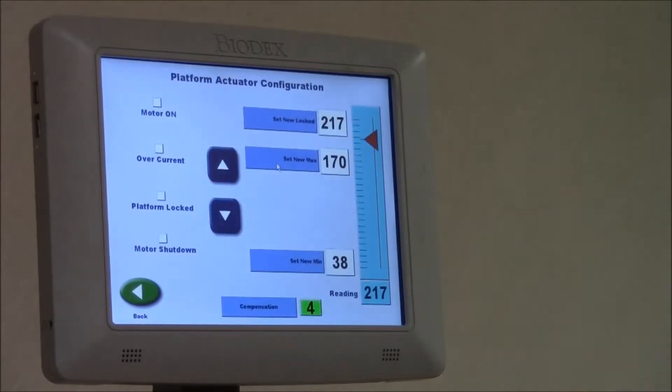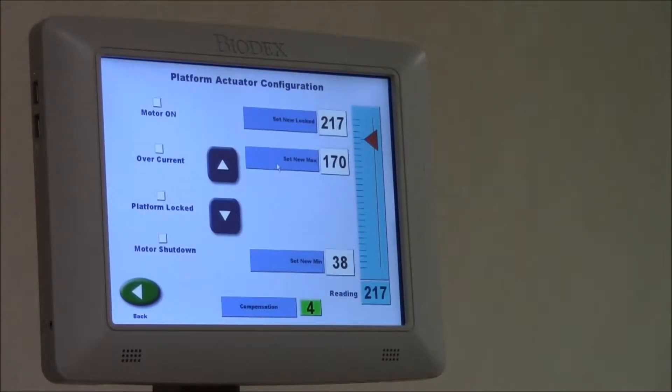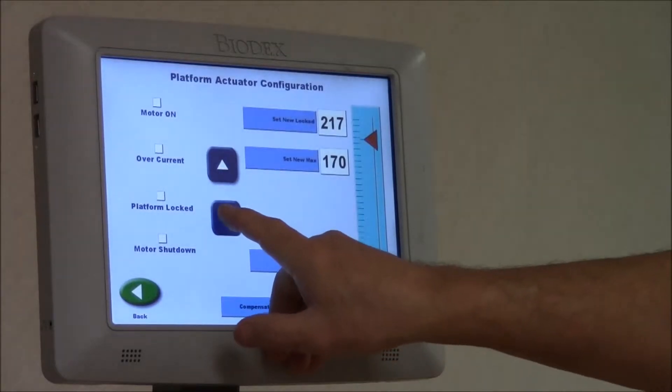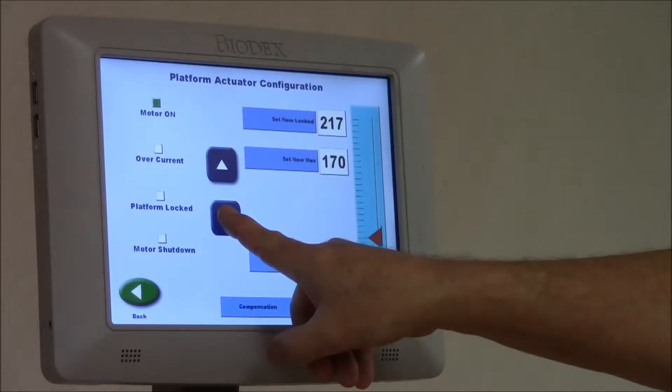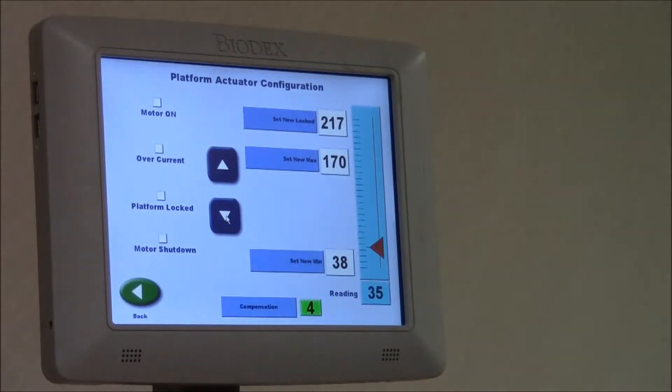Platform actuator. What we're going to do here is bring the platform all the way down until the motor stalls. This will help us remove the platform to get to the strain gauge.